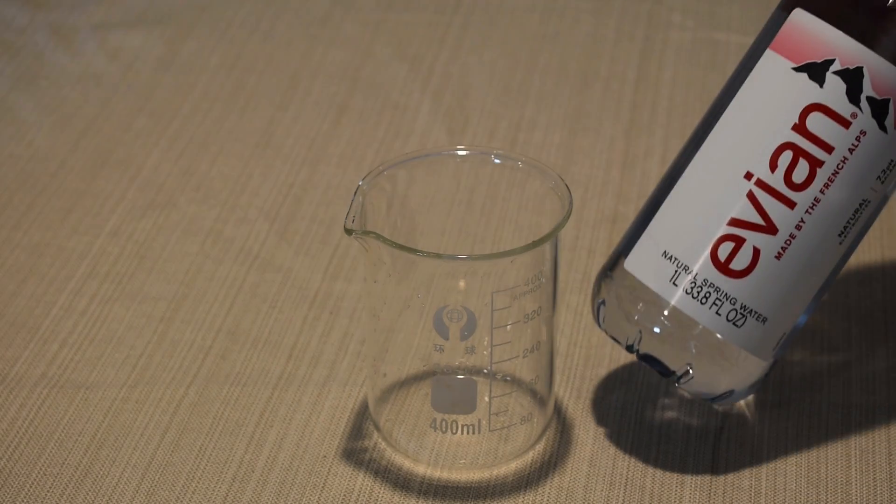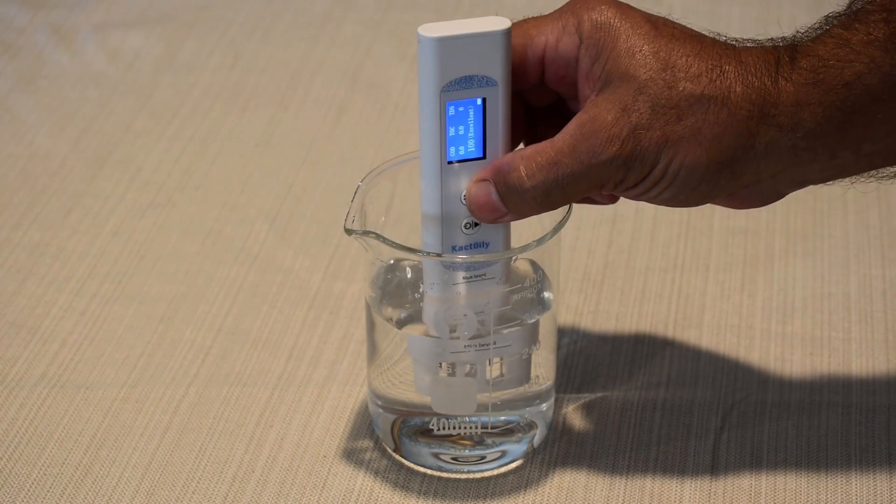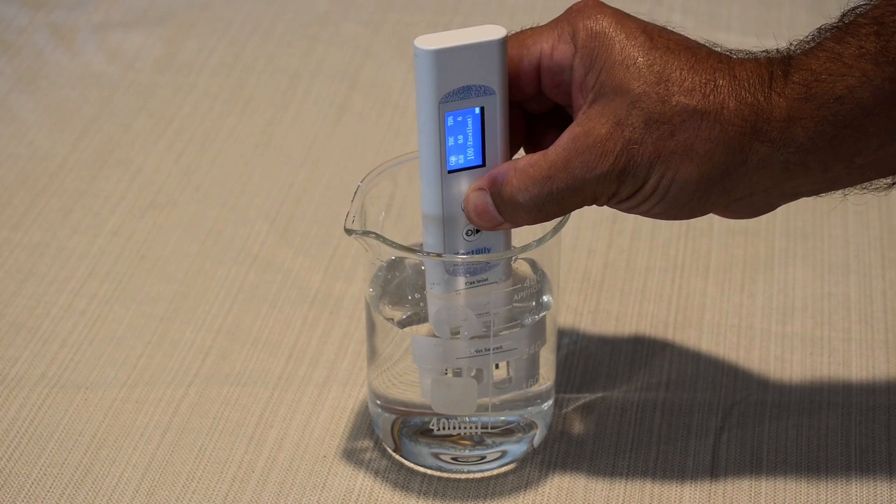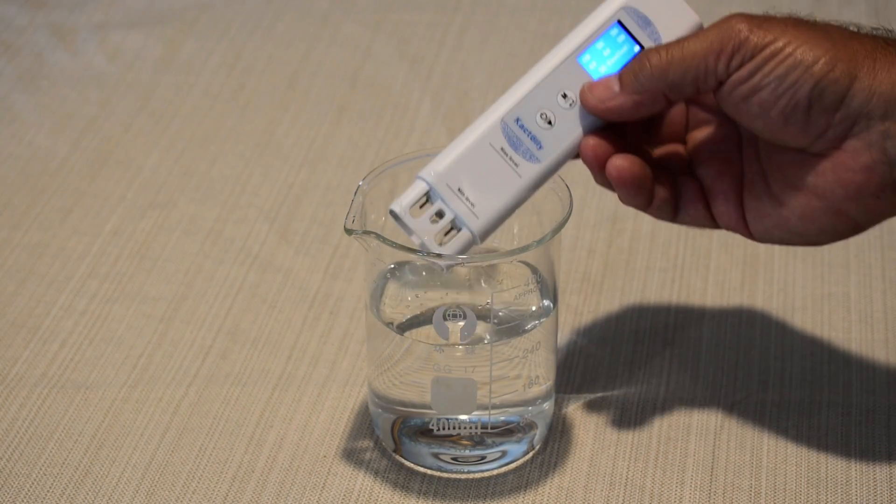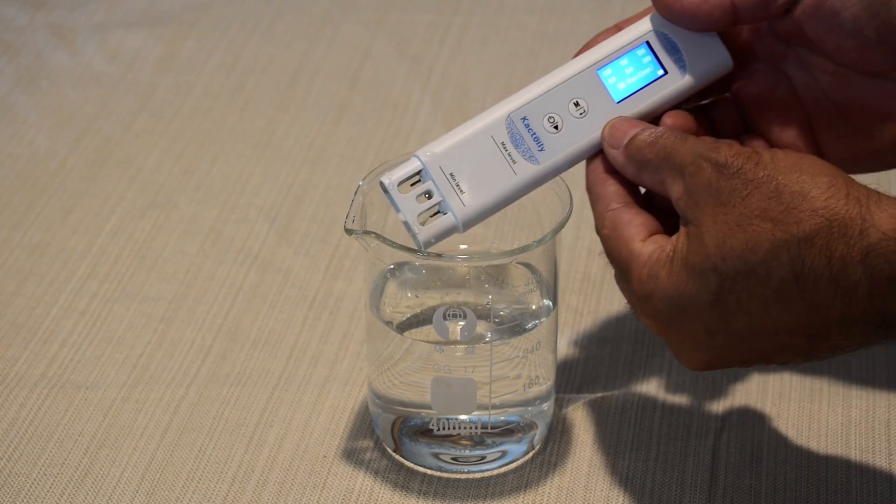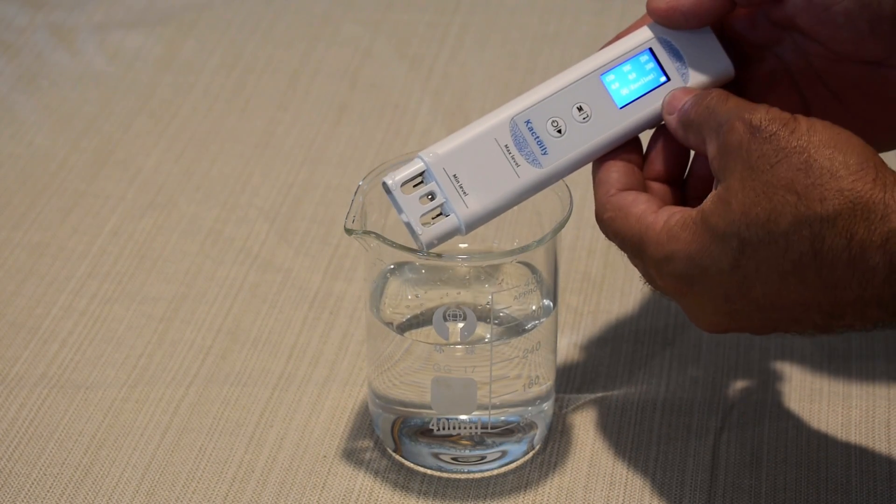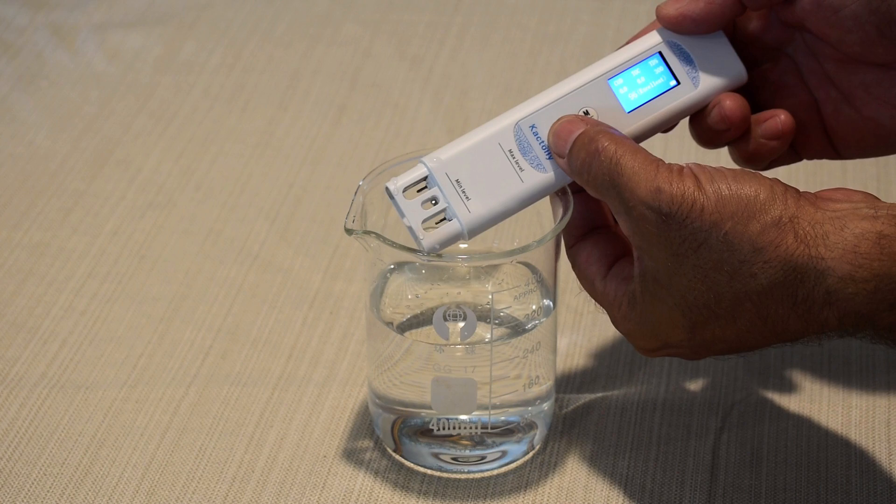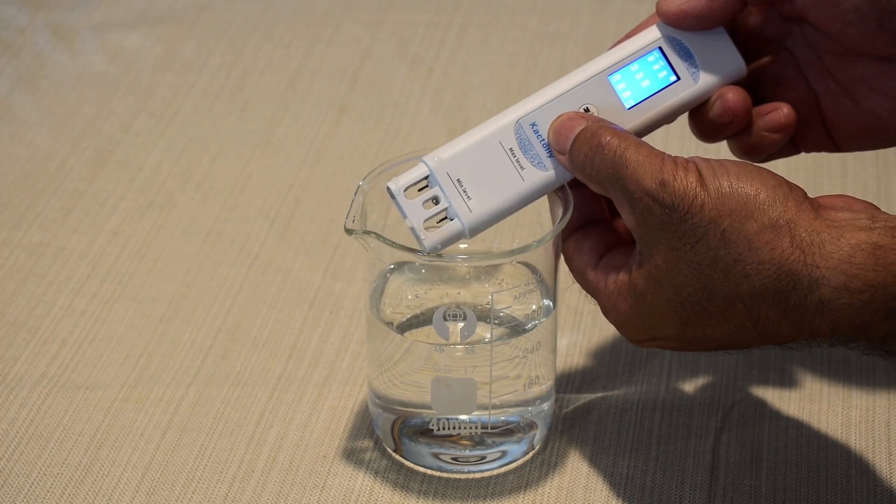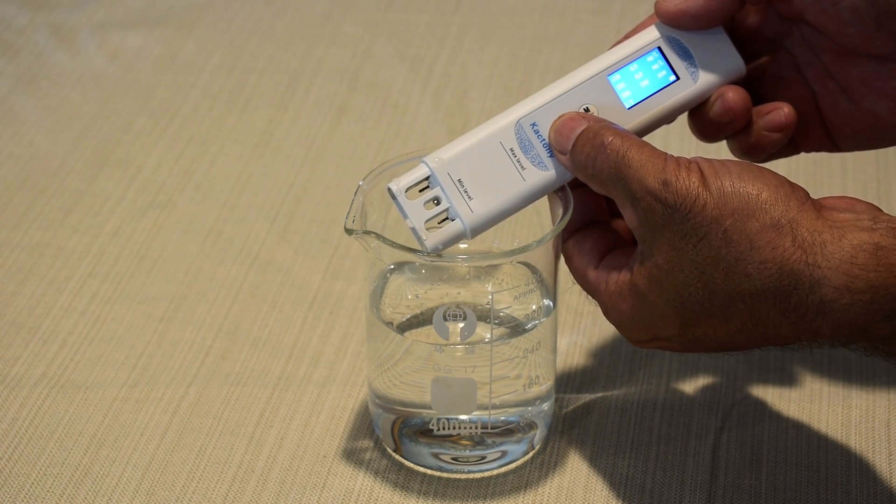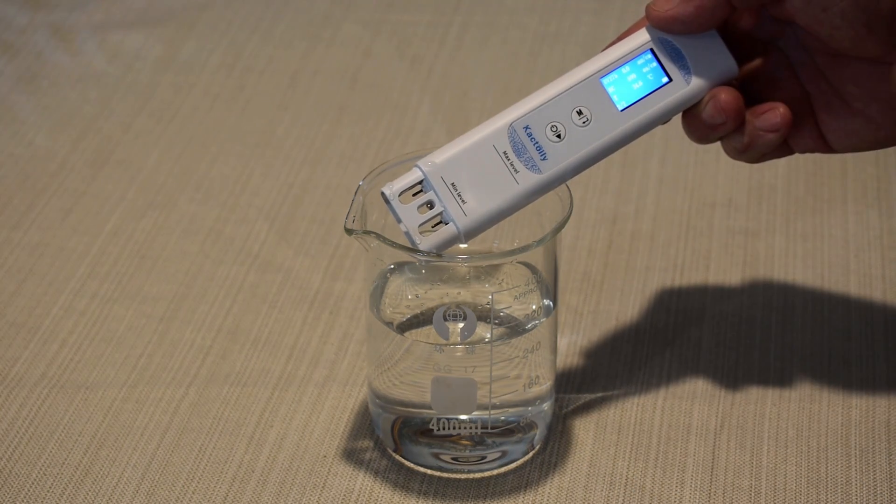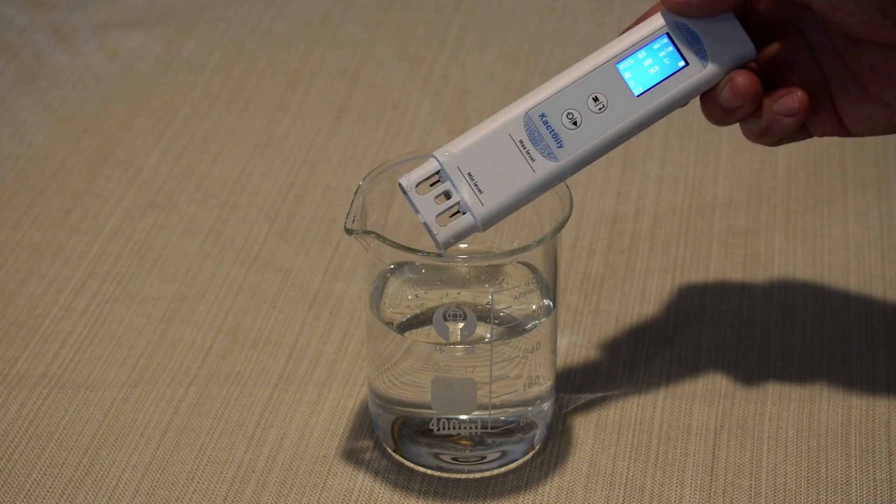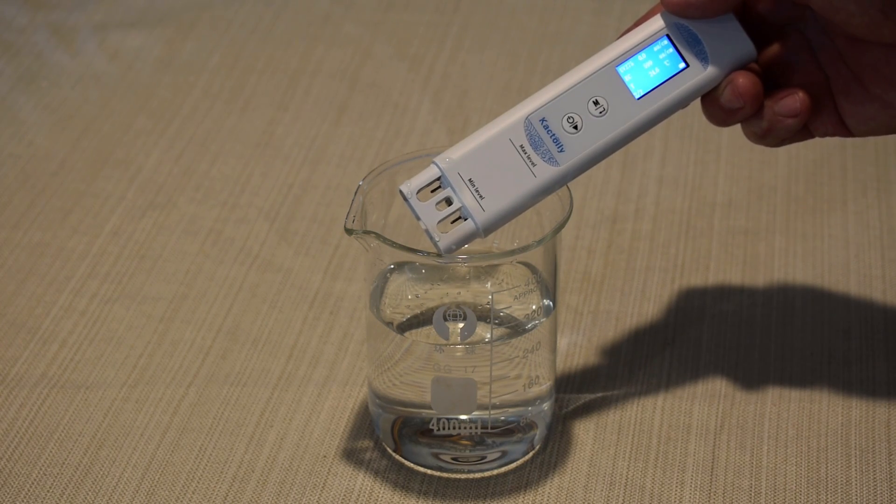Now Evian. All right. 96, excellent. TDS 300. COD, TOC are all zero. UV-275, that's zero. Electrical conductivity is right under 600.